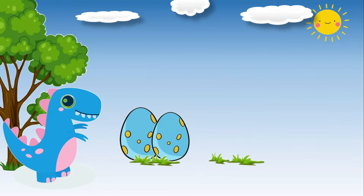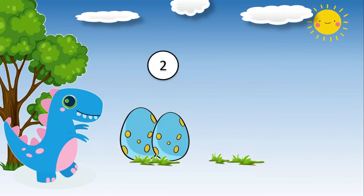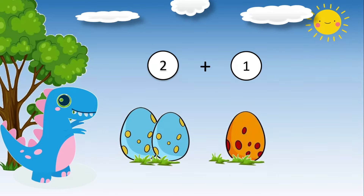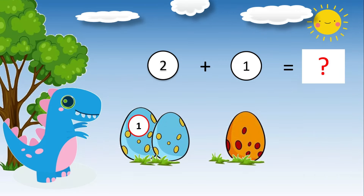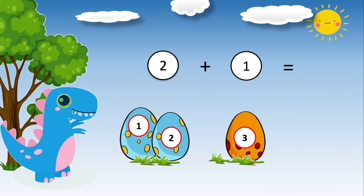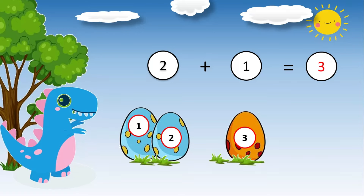Two dinosaur eggs plus one dinosaur egg is equal to what? Do you want to know the answer? Let's add one, two, three. Two plus one is equal to three.